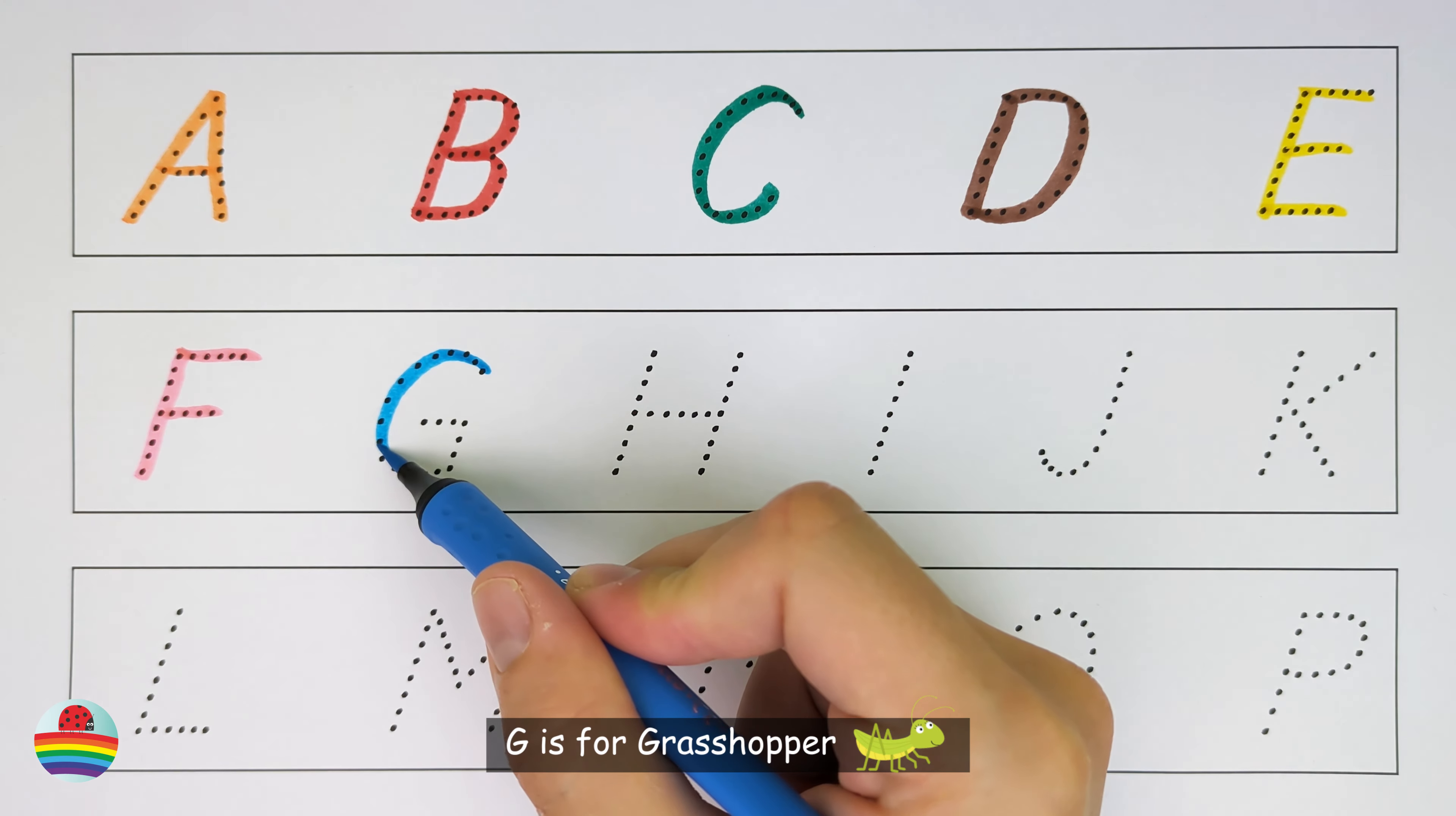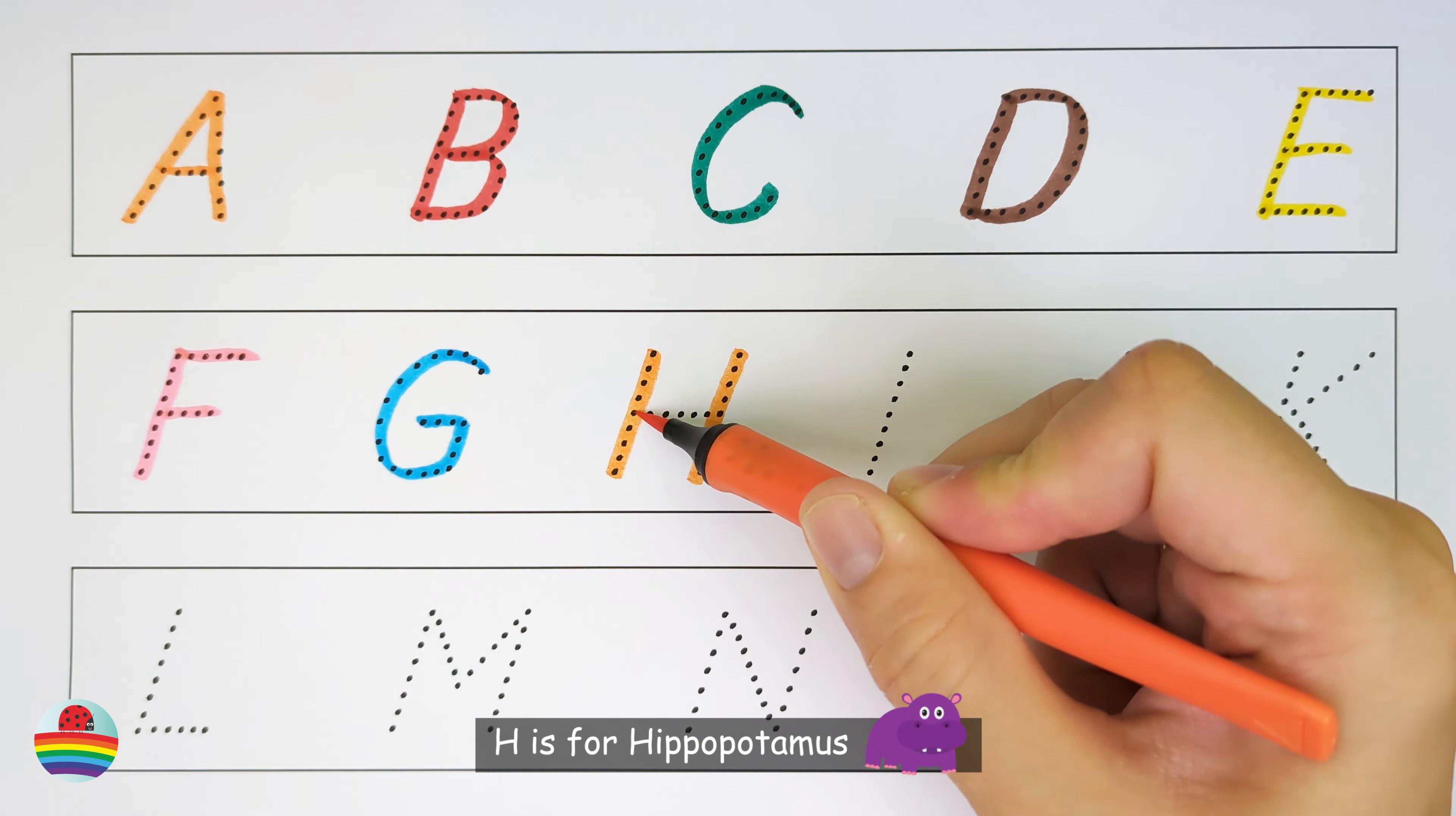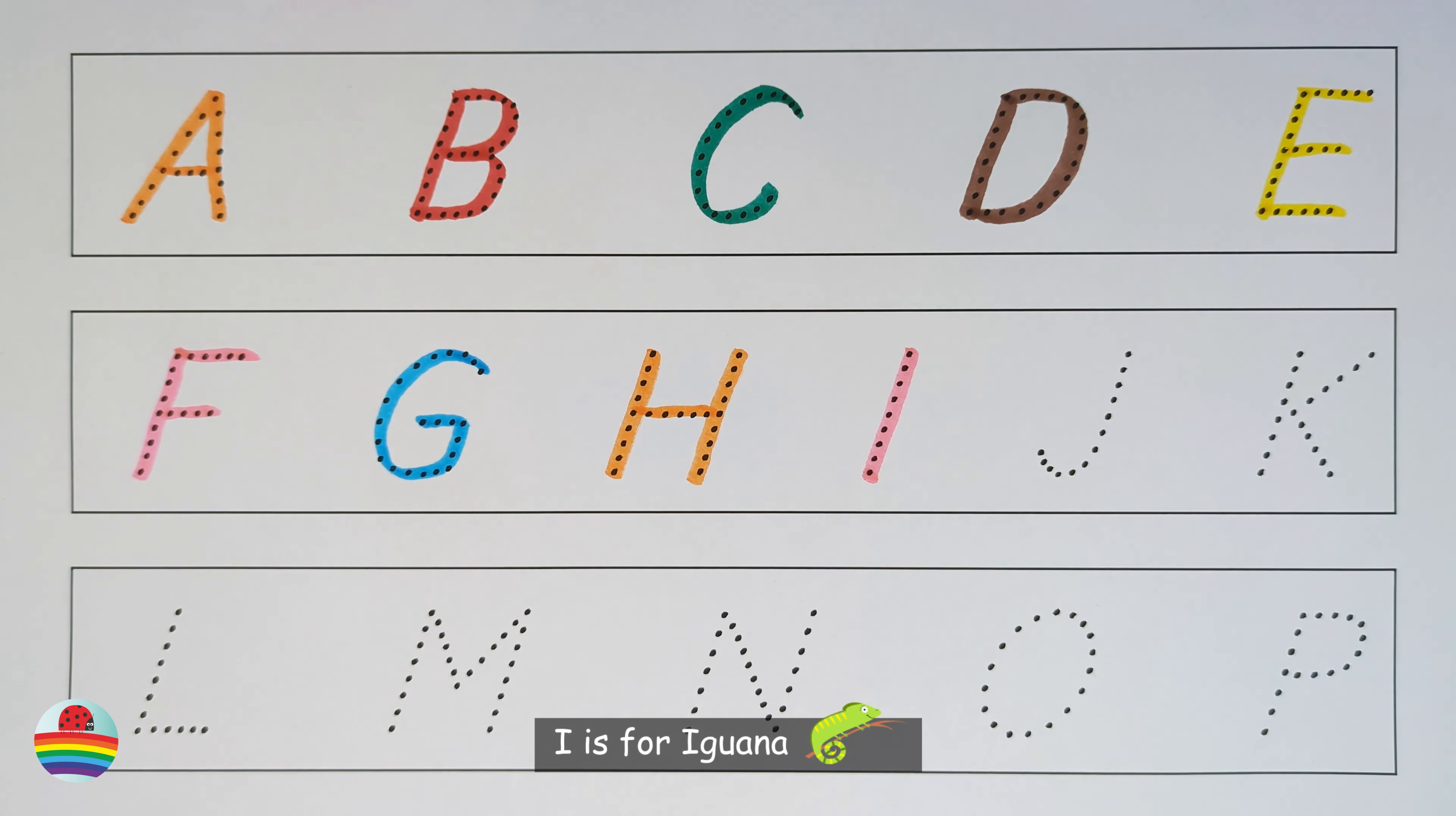G. G is for Grasshopper. G. H. H is for Hippopotamus. H. I. I is for Iguana. I.